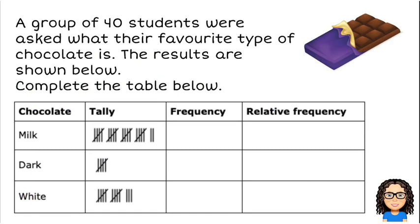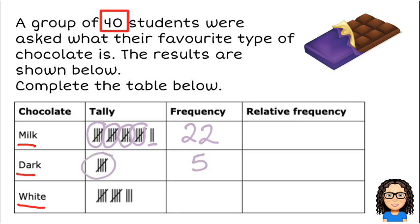Let's have a look at this question. A group of 40 students were asked what their favourite type of chocolate is. And the results are shown below. So we've got four different categories here. We've got milk chocolate, dark chocolate, and white chocolate. So we've got some tallies now. We just need to find out what those are. So the first one, that block there is a block of 5, 10, 15, 20 plus another two. That is 22 milk chocolates, which was the students' favourite. Let's have a look then at the dark. So we've got five there. So there were five students who felt that dark chocolate was their favourite. And white chocolate, 5, 10 plus another three. So that makes it 13. So that's what their frequencies are.